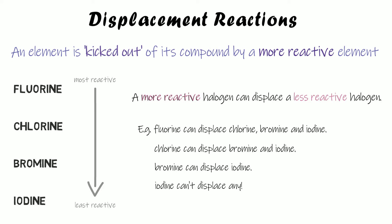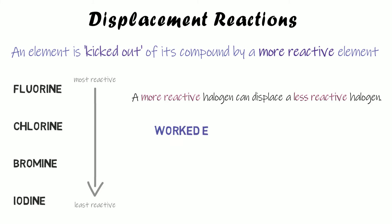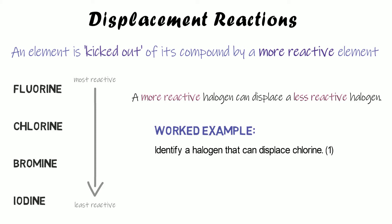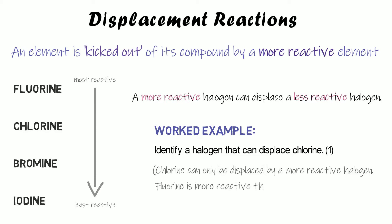So to determine whether this happens, you need to decide if one halogen is more reactive than another. Here's an example: identify a halogen that can displace chlorine. In order to displace it, it would have to be more reactive than chlorine. The only one that's more reactive is fluorine. So fluorine is more reactive than chlorine and would be able to displace it. The answer fluorine would get you the mark.